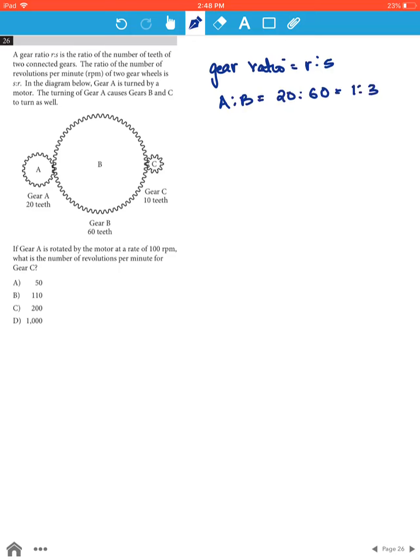Now the ratio of the number of revolutions per minute is S to R. So if R to S is 1 to 3, therefore the RPM for A to B will be S to R, which is 3 to 1. Now we know the revolutions per minute for A